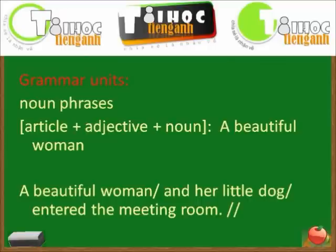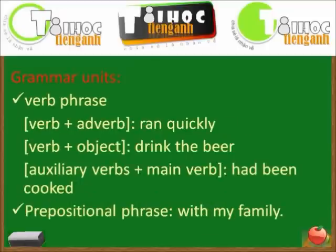Number two: grammar units also help us to form thought groups. Noun phrases — article plus adjective plus noun: 'A beautiful woman and her little dog entered the meeting room.' Verb phrases — verb plus adverb: 'Ran quickly.' Verb plus object: 'Drink the beer.' Auxiliary verb plus main verb: 'Have been cooked.' Prepositional phrase: 'With my family.'